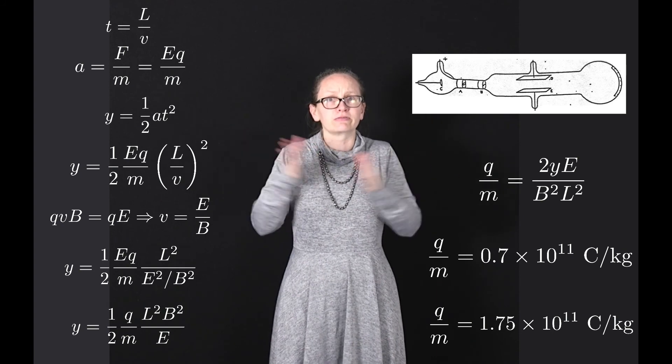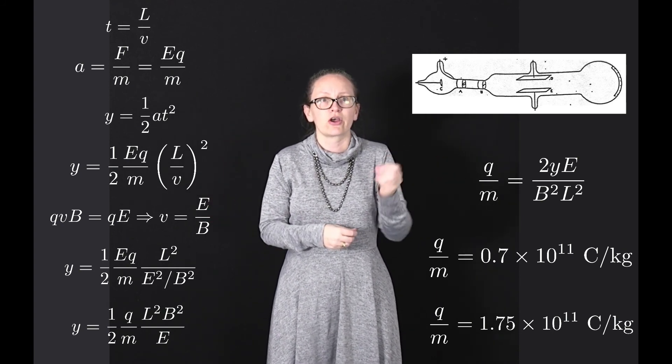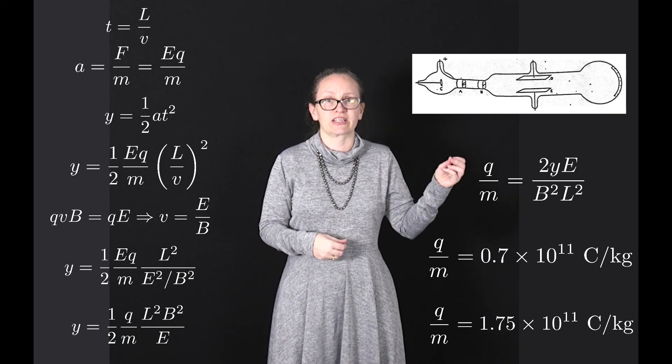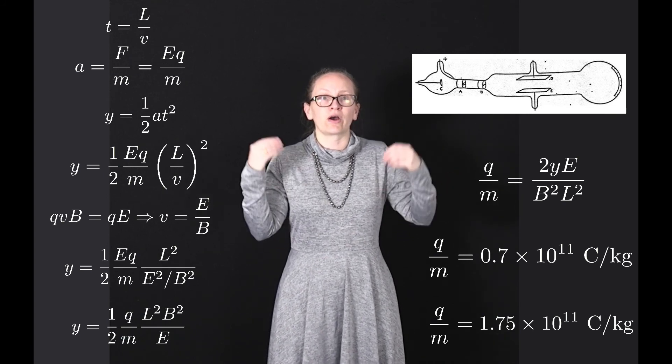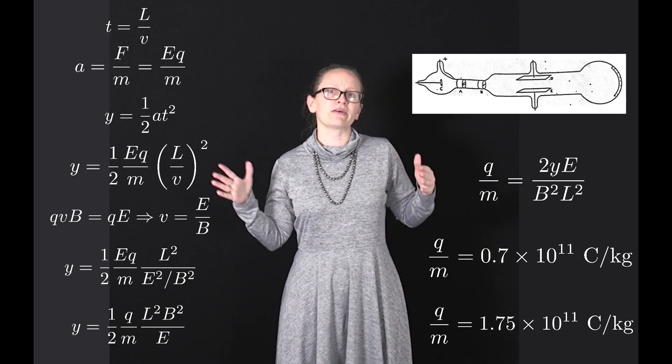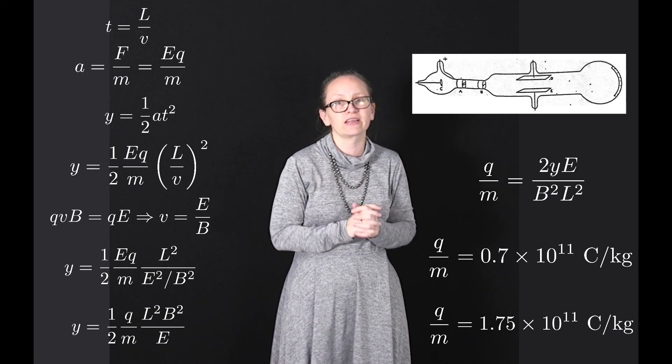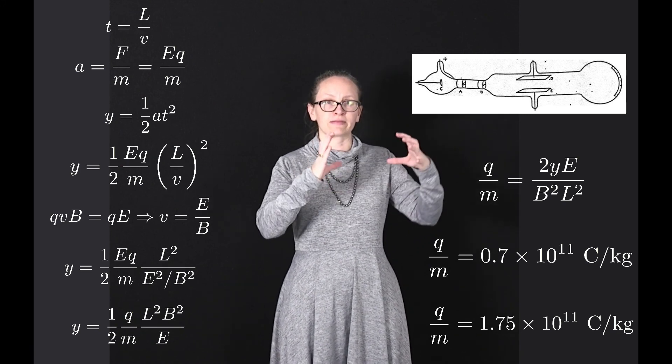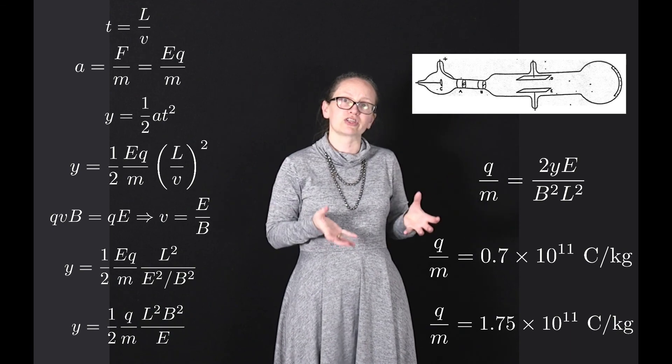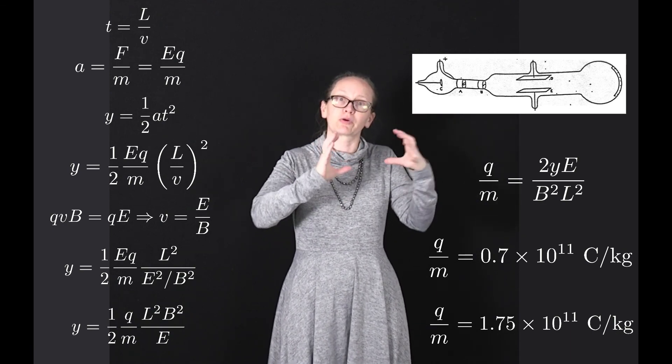Thomson made great strides forward in showing that electrons were a lot lighter than previously measured and were definitely negatively charged. He went on from this to propose the plum pudding model, which we now know is not correct. He envisaged atoms as a large sphere of positive charge with these small electrons embedded throughout.